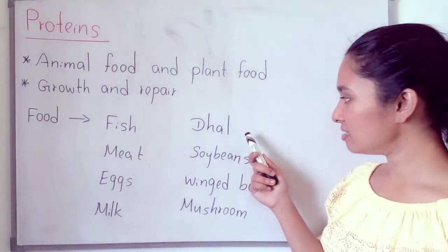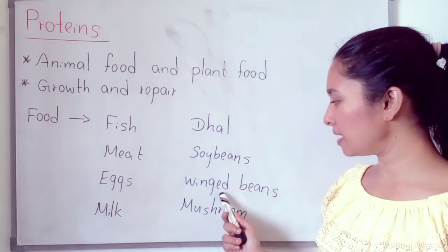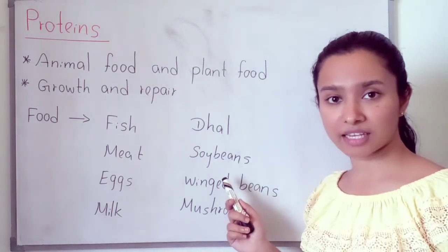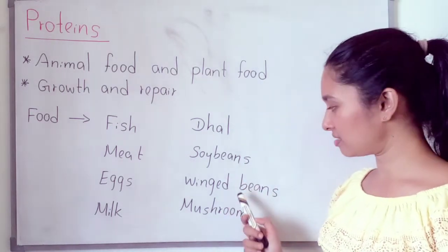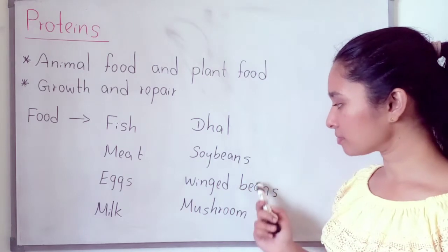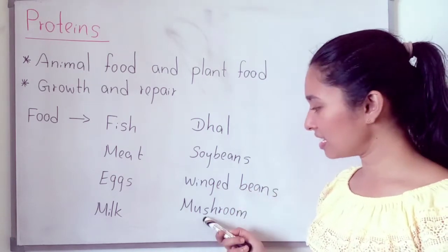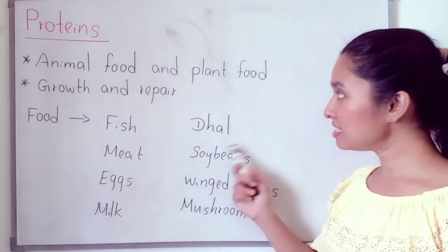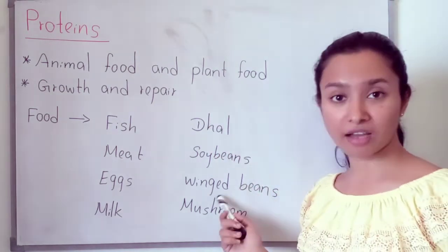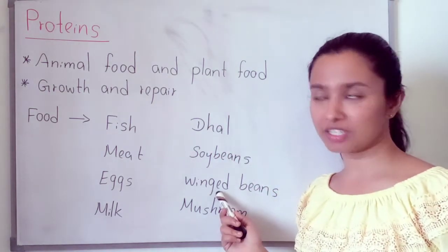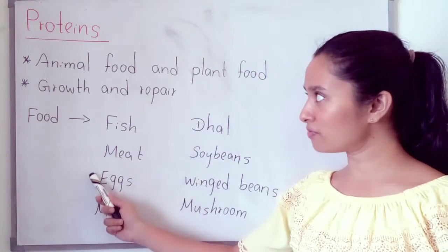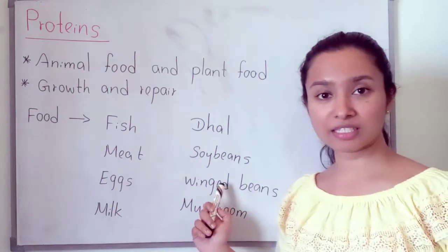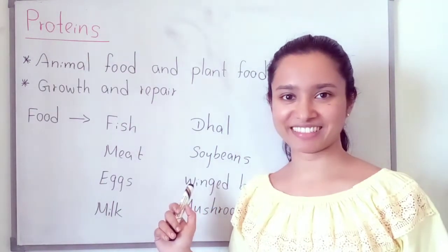Plant foods rich in proteins include dal, soybeans, green beans — mostly beans contain more proteins — and mushrooms. So, both animal food and plant food contain proteins.